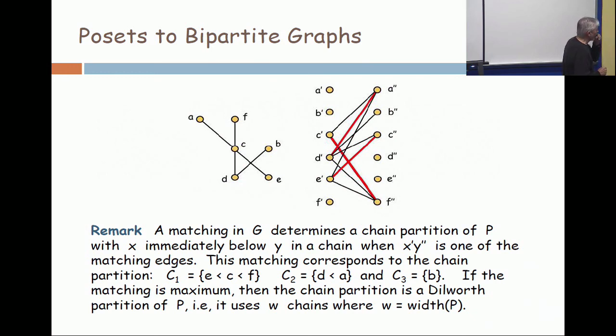And now, elsewhere, I have a C' down to F double prime. So, that means I'm going to have C' immediately under F double prime in a chain.